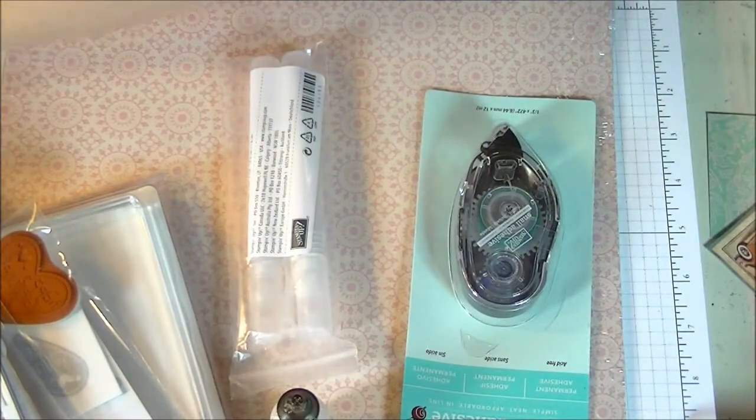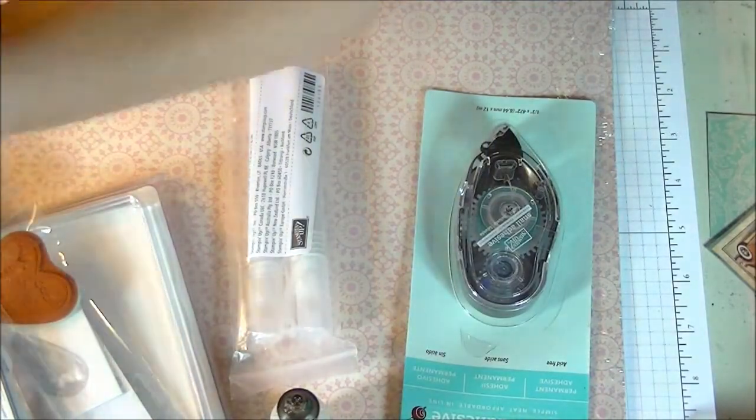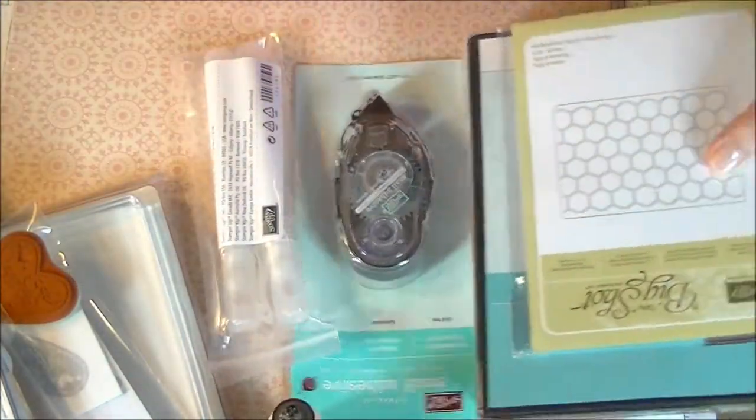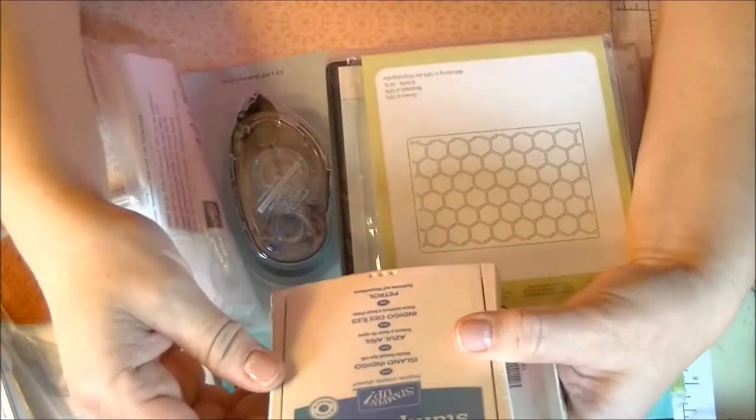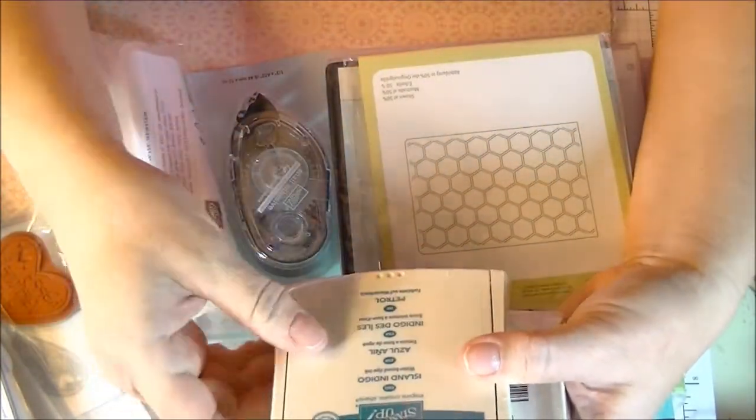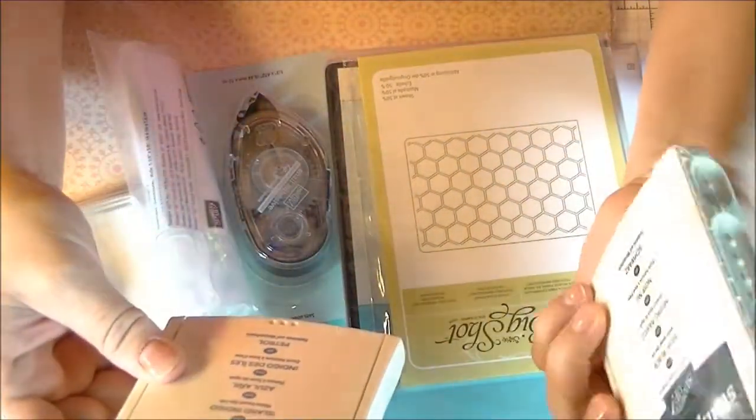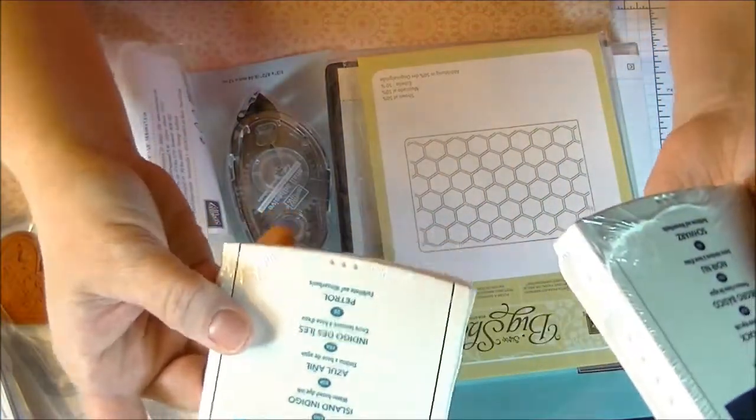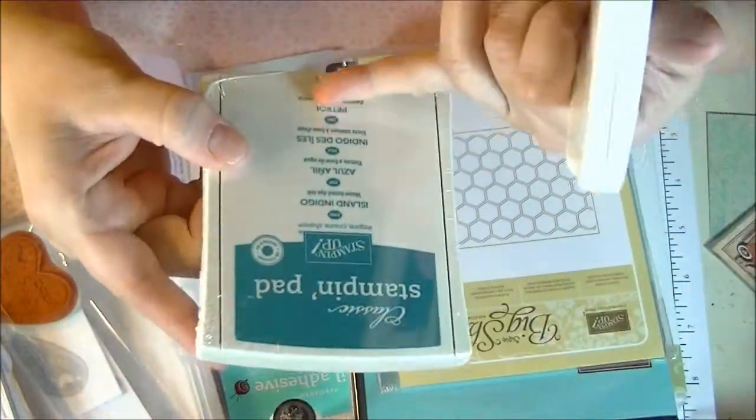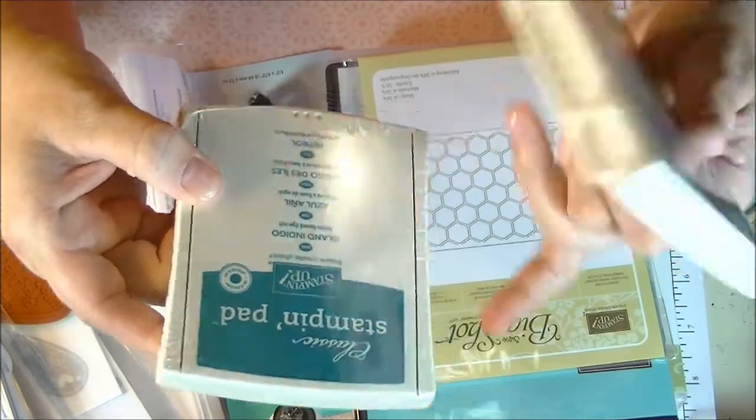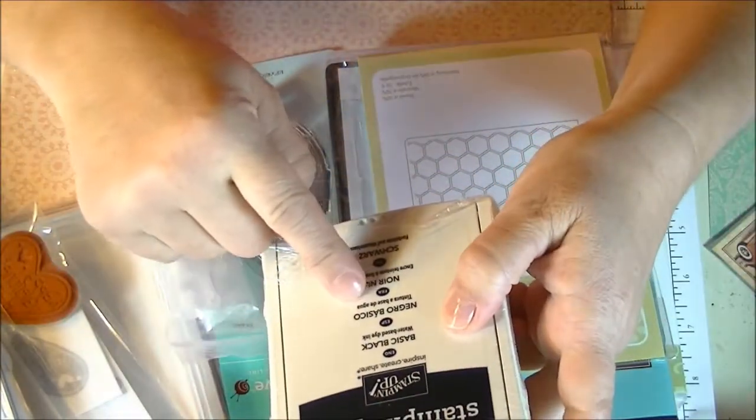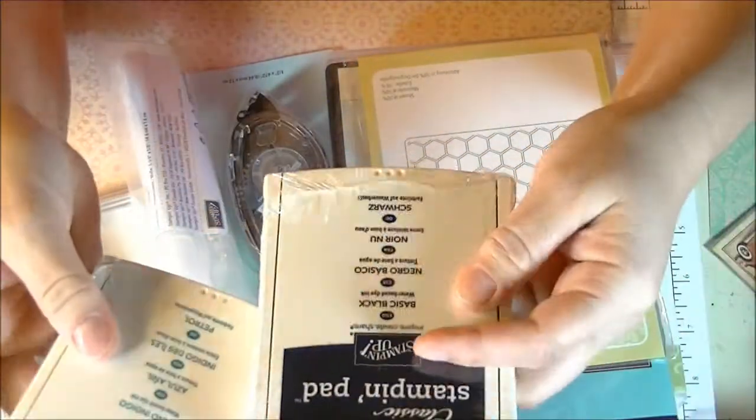Here's some more stuff I got. I got the island indigo regular classic stampin pad and you know that they have the new foam pads on these, and the basic black classic stampin pad.